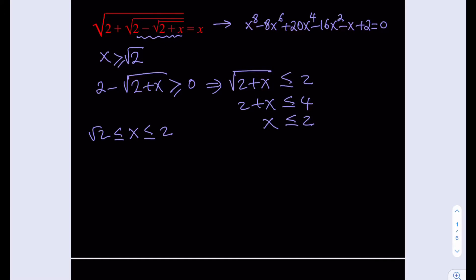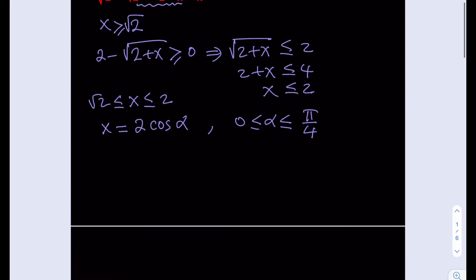Since x is greater than or equal to root 2, it's definitely going to be positive, and 2 plus x is also non-negative. We now know x needs to be between these two numbers, so we can safely assume x equals 2 times cosine of alpha, where alpha is in the first quadrant — specifically the first half, so alpha is between 0 and pi over 4. We're going to use a trigonometric substitution.